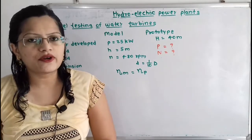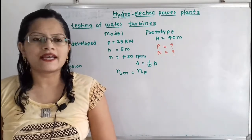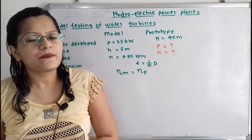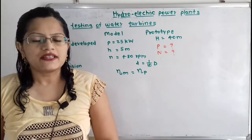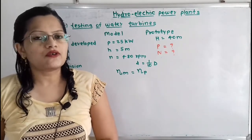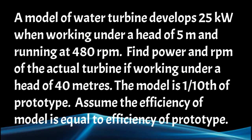In this video we are going to find out the power developed as well as the speed in RPM for the prototype unit when testing is carried out on the model. A model of water turbine develops 25 kilowatt when working under a head of 5 meters and running at 480 RPM. Find the power and RPM of the actual turbine if working under a head of 40 meters. The model is 1/10th of the prototype.